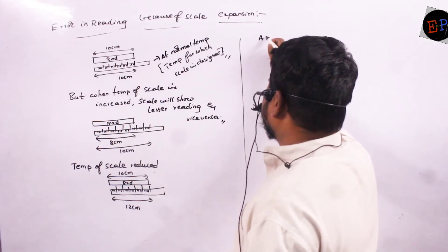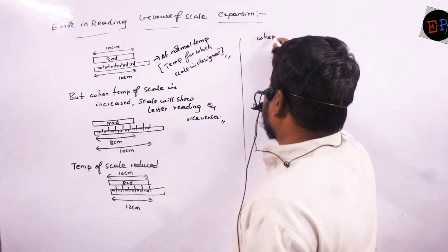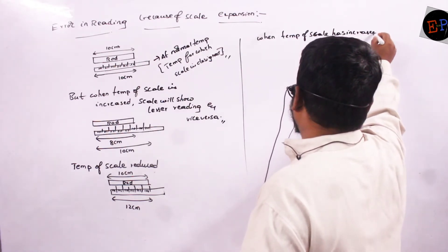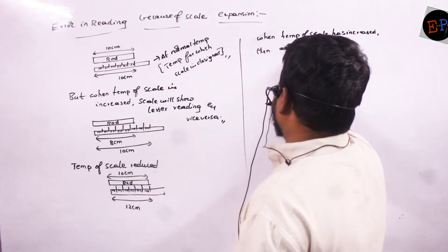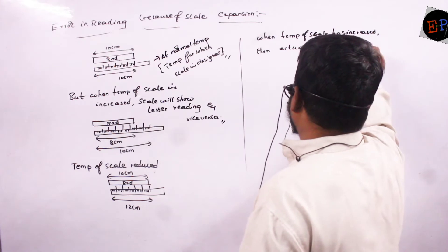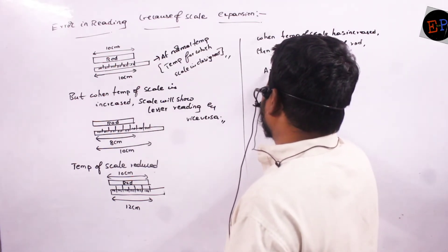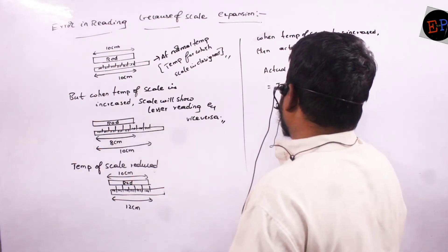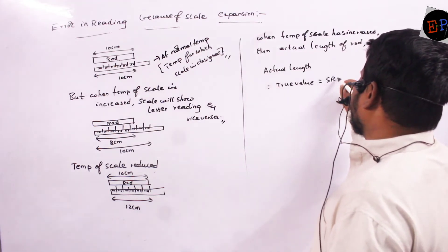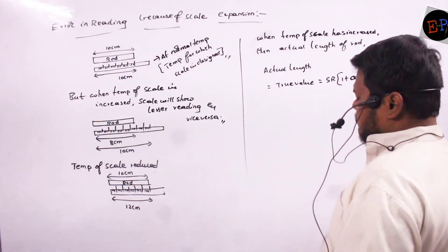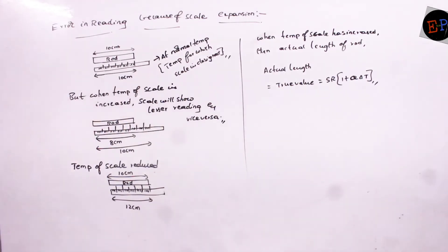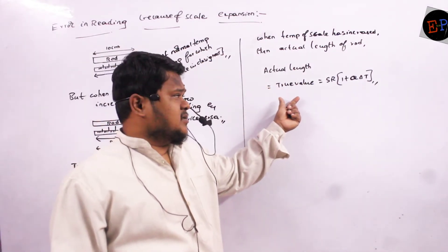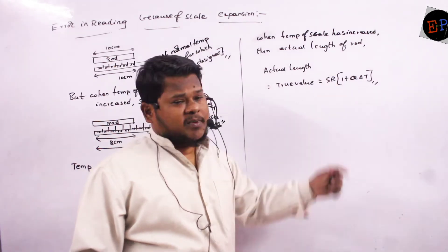So therefore, how can I measure the actual value? When the temperature of the scale has increased, the actual length of the rod — or you can call it the true value — is equal to scale reading multiplied by (1 + α∆T). Just remember this formula. True value equals scale reading multiplied by (1 + α∆T).